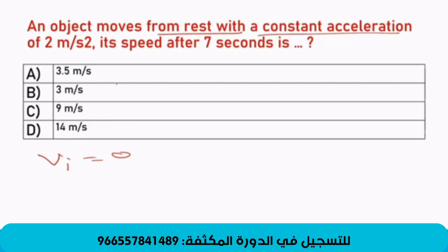V, f equals V, i. Let's see. Let's see if it's okay. An object moves from rest with a constant acceleration. Its speed. Now, we have this acceleration, which is A. It's constant. Two meter per second square. And we have its speed. We are asked about the V, f. We don't know. Because it's speed. He asked about its speed. What will be after seven seconds, which is the time. T equals seven seconds. Same thing. We need just to substitute.